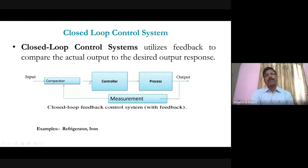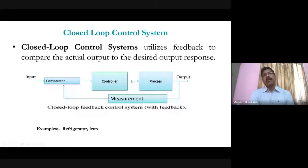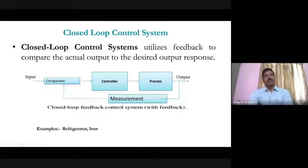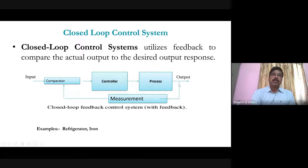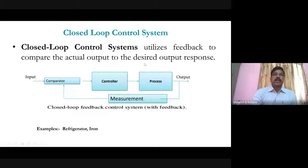According to the error, the controller takes action — if the error is large, the controller output is large; if the error is small, the controller output is small. The controller output is given as input to the process or plant, and then the controlled signal appears at the output. The main difference between open-loop and closed-loop is that closed-loop has a feedback element, whereas open-loop does not. Closed-loop utilizes feedback to compare actual output to desired output.